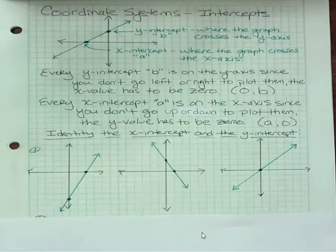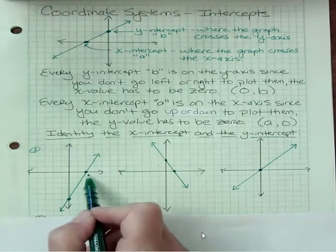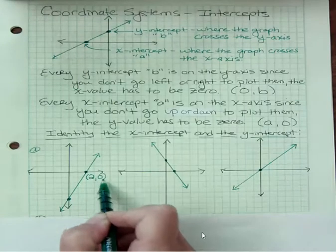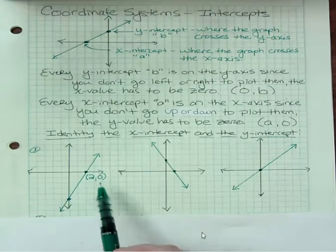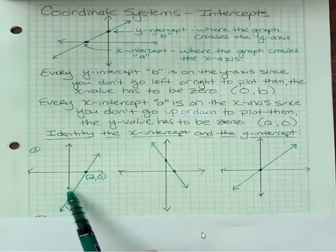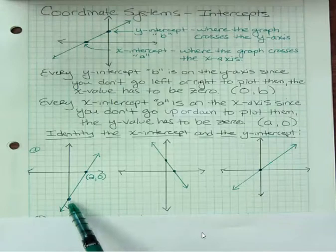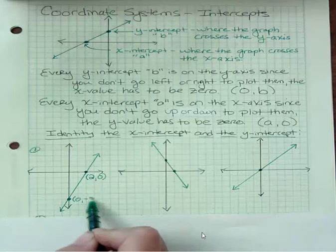What about in number one? Where does this graph cross the x-axis? It crosses the x-axis at two. So the x-intercept is two, zero. What about the y-intercept? Well, it's one, two, three, four, five. It crosses the y-axis at negative five. But we didn't go left or right, so that's got to be zero, negative five.